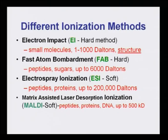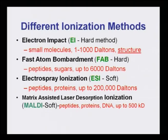The third ionization method is electrospray ionization, or ESI, which is a soft method, used for peptides and proteins up to almost 200,000 daltons. The fourth and most significant, latest method is matrix-assisted laser desorption ionization, or MALDI, also a soft method. So we have two hard methods — electron impact and FAB — and two soft methods — electrospray ionization and MALDI. These are the four methods of ionization of a molecule.